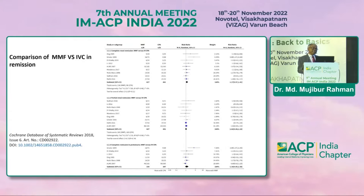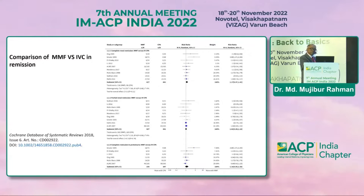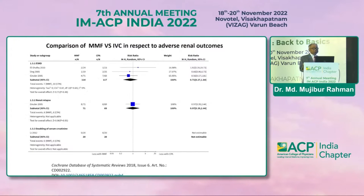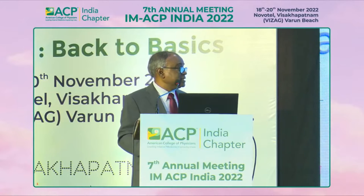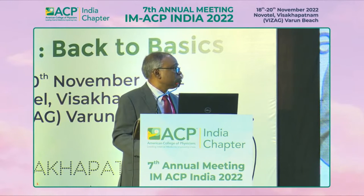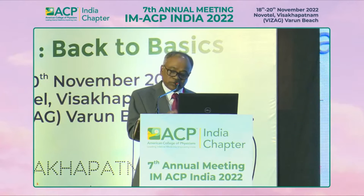In 2018, the Cochrane meta-analysis showed that both drugs are equally effective. The terminal effect is not going toward either the MMF or the IV cyclophosphamide side. The renal outcome is almost the same. Ovarian failure appears to be less with MMF, but this is not statistically significant. So you can choose either drug.